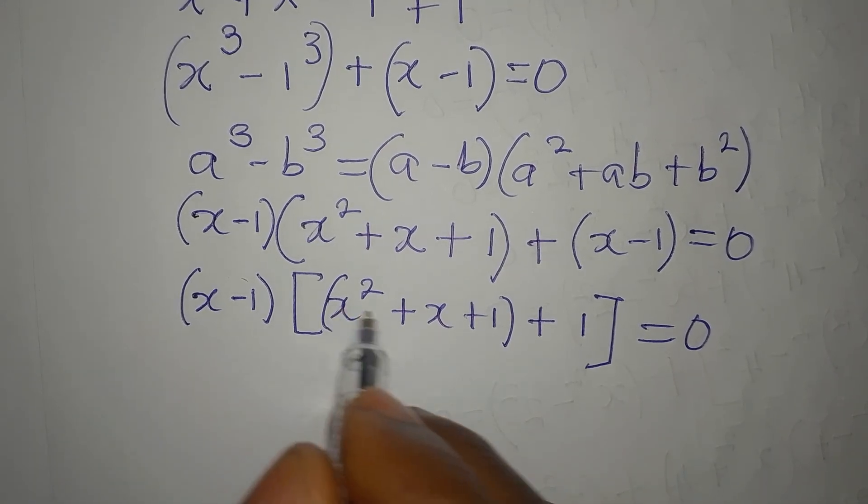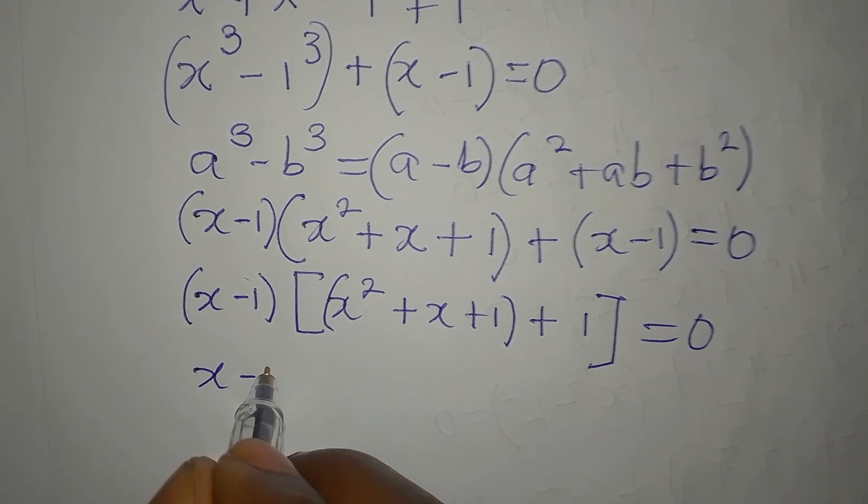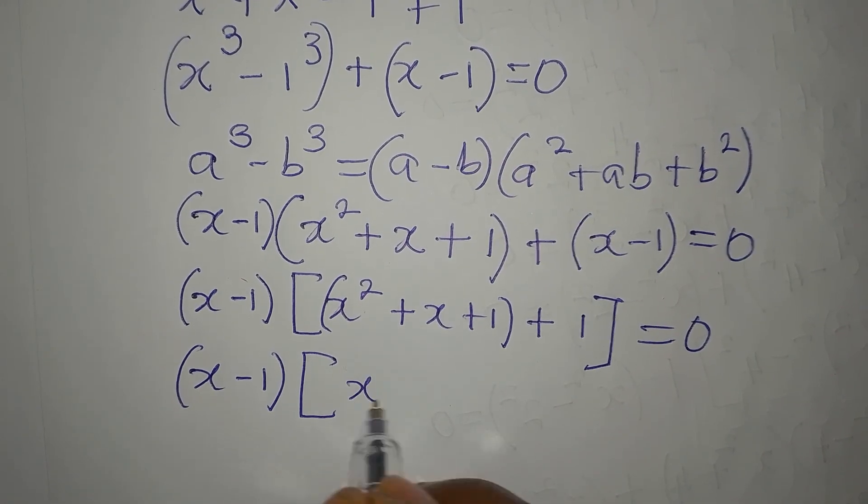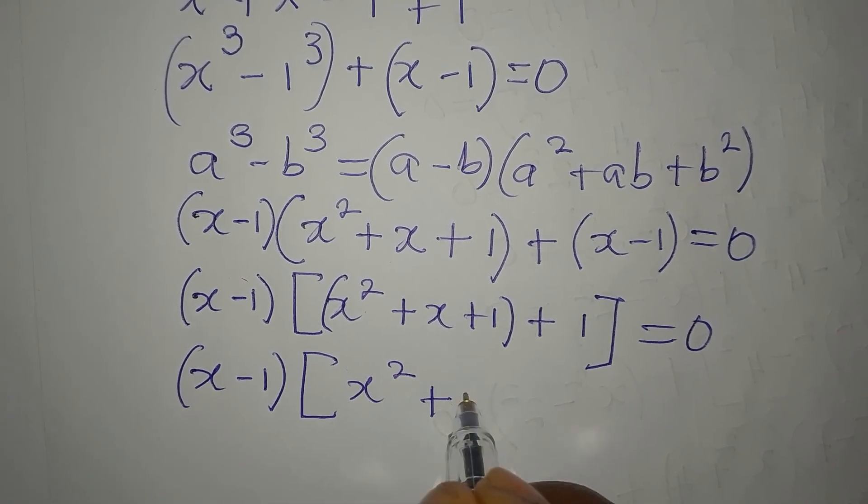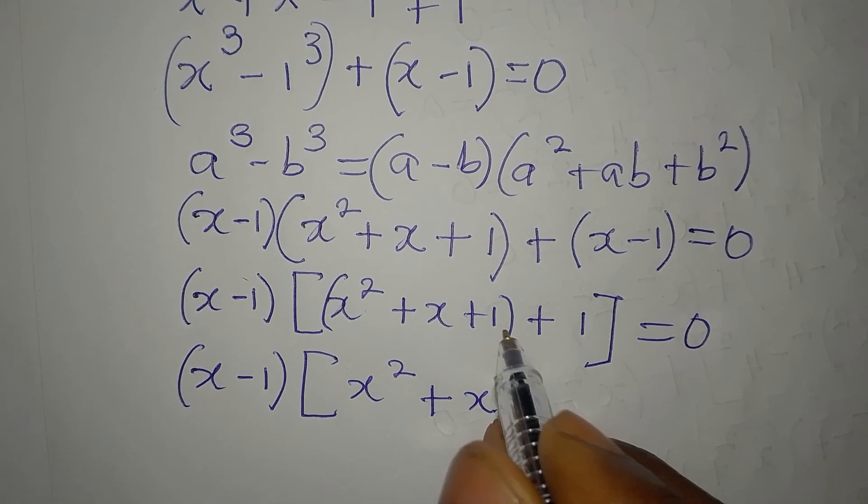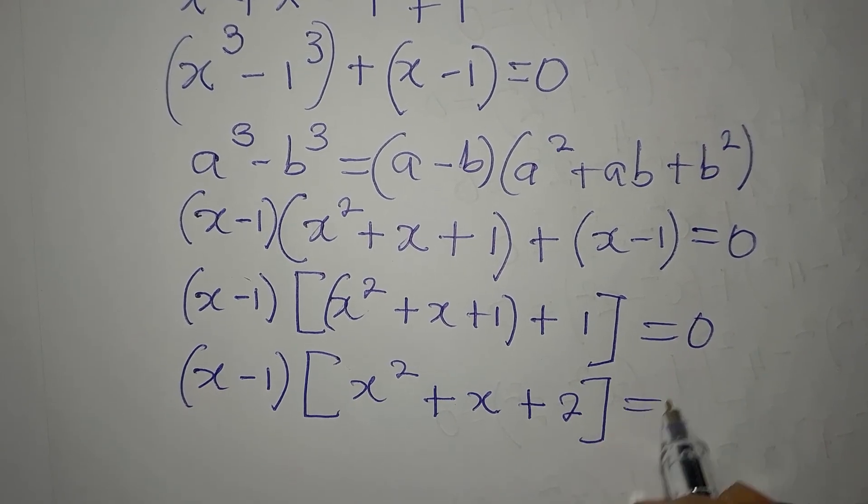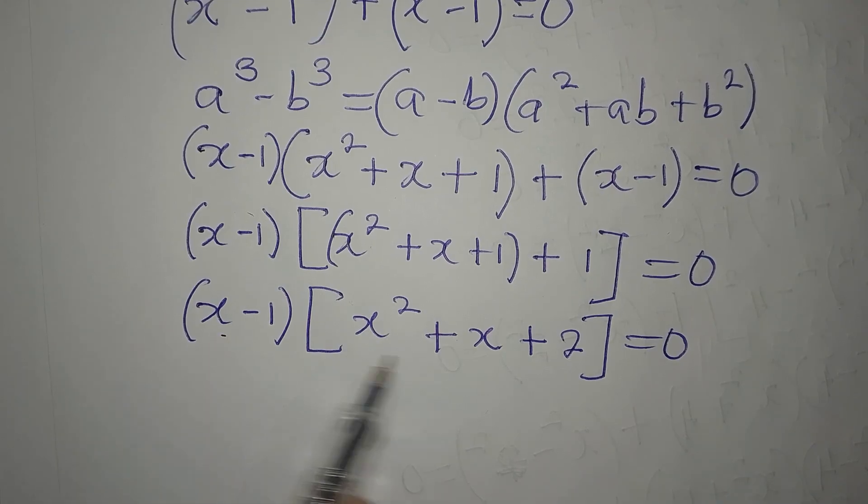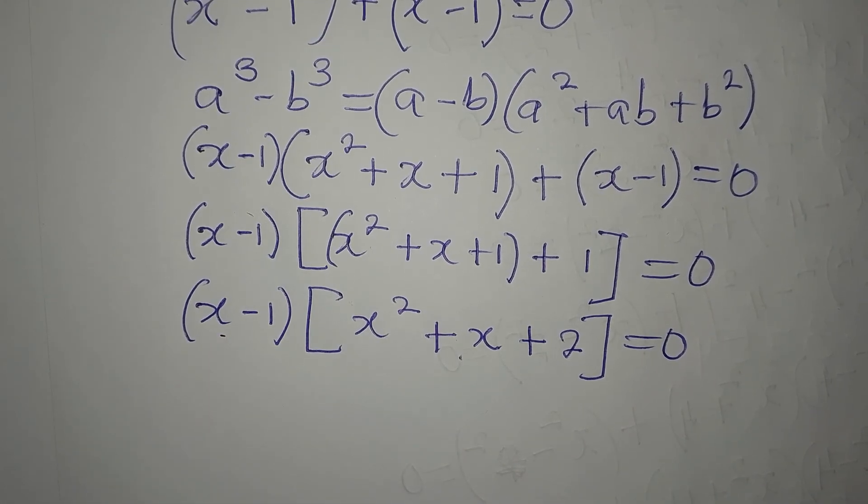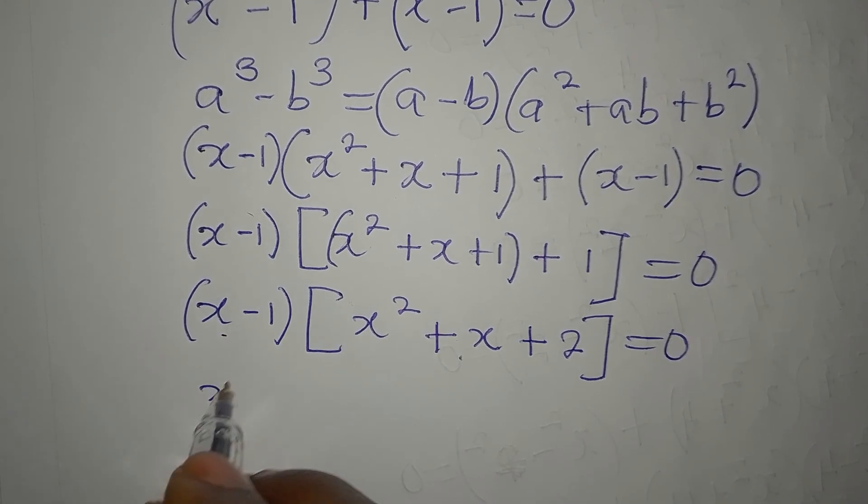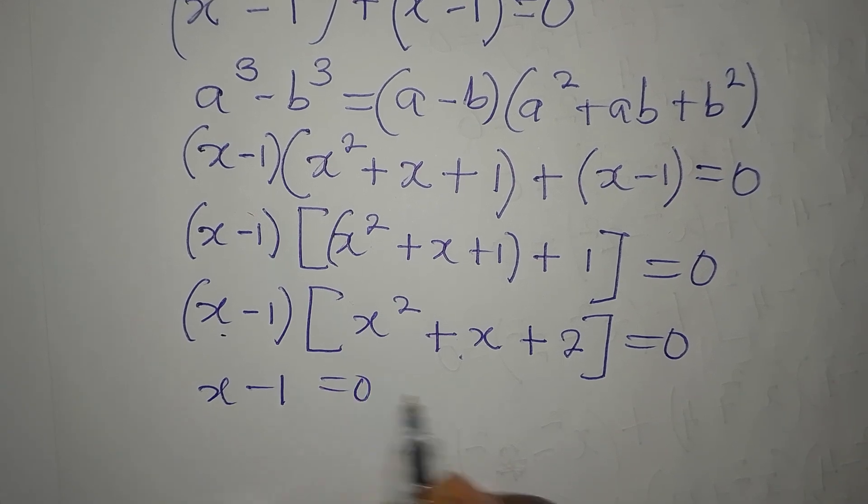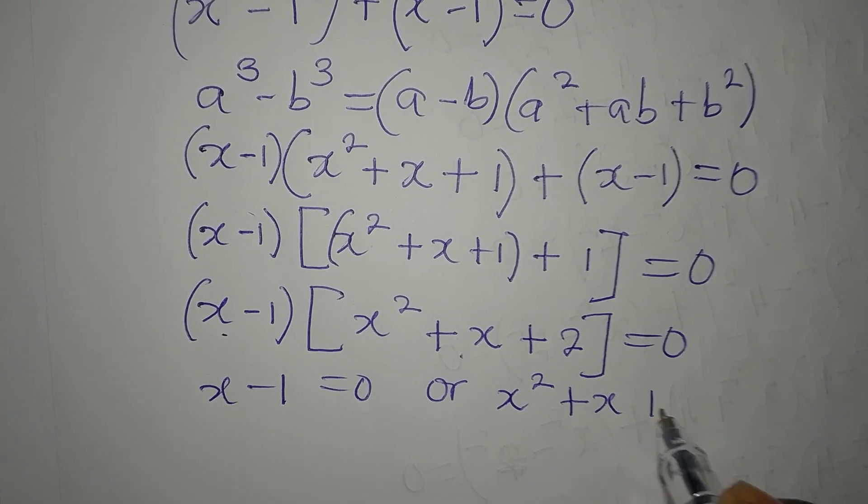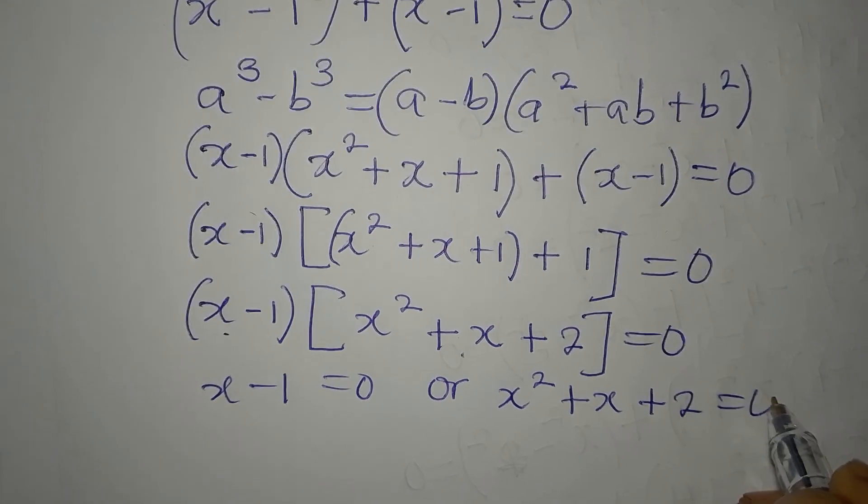Now, let's simplify this together. We have x minus 1 as the common factor. Then here, it's x squared plus x plus 1 plus 1 which is 2, equals 0. So we are multiplying these two to get 0, which means either of them must be equal to 0. So it's either x minus 1 equals 0, or x squared plus x plus 2 equals 0.